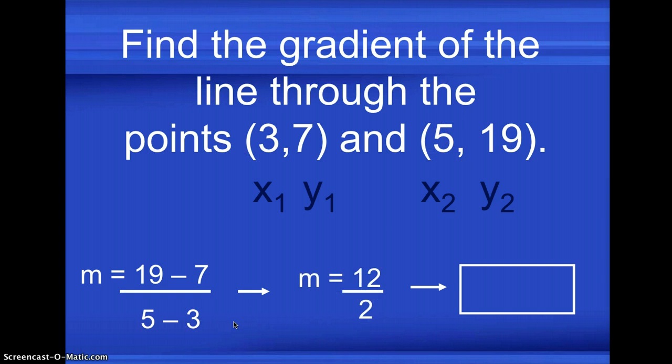And to simplify that, 19 minus 7 is 12, 5 minus 3 is 2, 12 divided by 2 is 6. So the slope or the gradient is 6 or your M is 6.